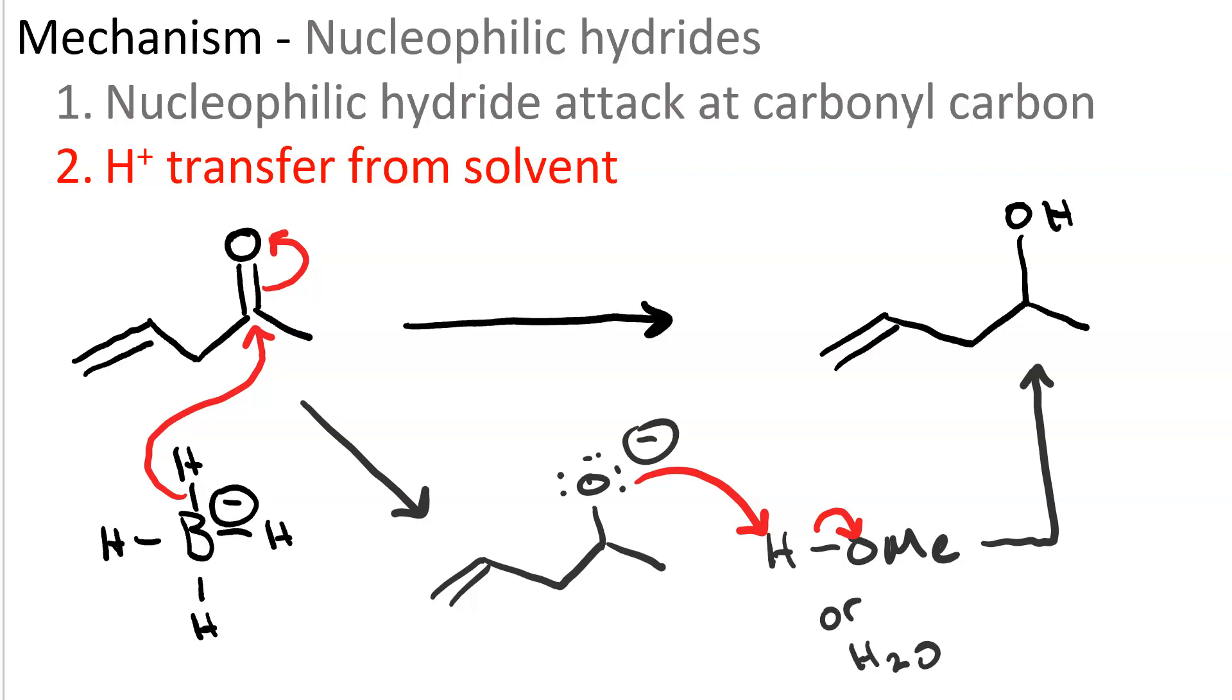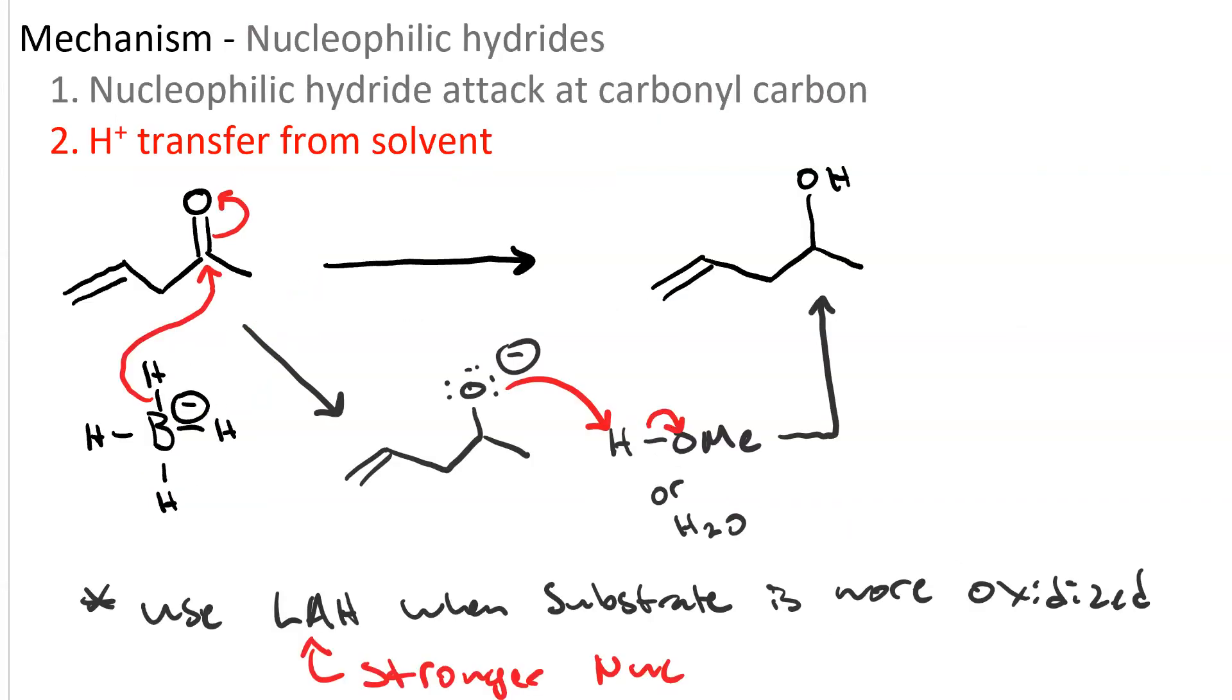You need a sledgehammer when you've got either a carboxylic acid or an ester. However, since LAH is a stronger nucleophile, you use it for more oxidized substrates when the carbonyl carbon is also connected to another oxygen besides the carbonyl oxygen. We'll come back to that in a minute.